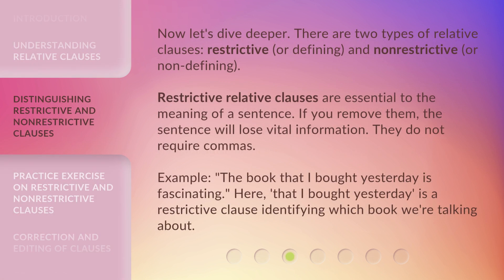Now let's dive deeper. There are two types of relative clauses: restrictive, or defining, and non-restrictive, or non-defining. Restrictive relative clauses are essential to the meaning of a sentence. If you remove them, the sentence will lose vital information. They do not require commas. Example: 'The book that I bought yesterday is fascinating.' Here, 'that I bought yesterday' is a restrictive clause identifying which book we're talking about.